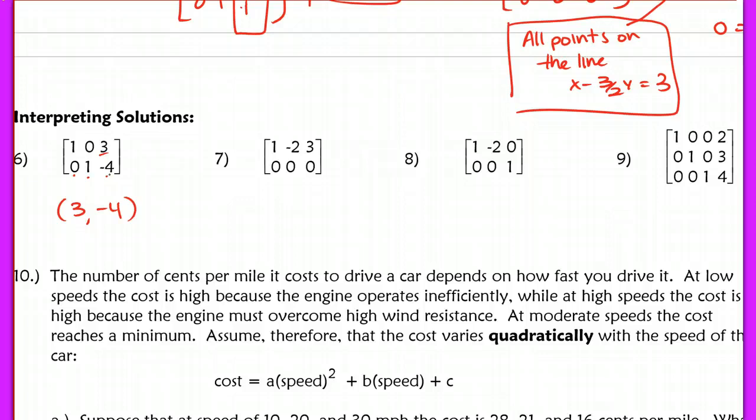In problem number 1, 1x plus 0y equals 3. So in other words, x equals 3, and y equals negative 4, because 0x plus 1y equals negative 4. In number 7, this is a true statement in the bottom, if 0 equals 0, which means that this is all points on the line x minus 2y equals 3. So it's all points on this line here.